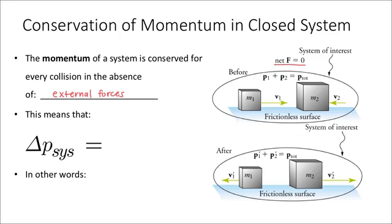Mathematically, we could say that the delta — or the change — in the momentum of the system is equal to zero. In other words, there is no change in the momentum of the system. Each object's momentum will change, but together their momentums will sum to the same amount before and after.